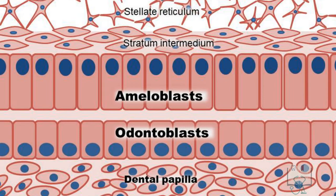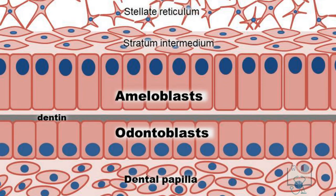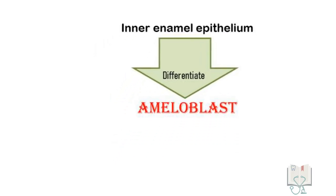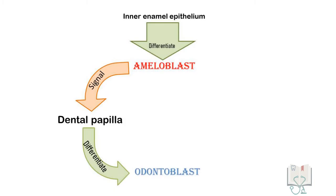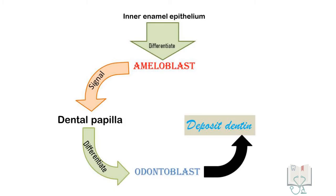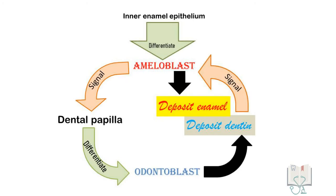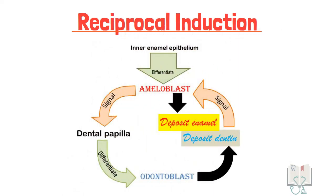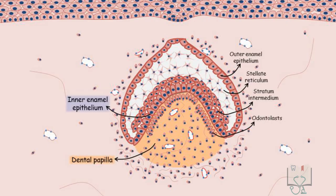Odontoblasts eliminate the acellular zone and start depositing dentine first. Only after the deposition of the first layer of dentine is enamel deposition initiated by ameloblasts. So we see that ameloblasts differentiate first, then they induce differentiation of odontoblasts, but the odontoblasts deposit dentine first. This dentine then induces ameloblasts to deposit enamel. This whole process of cells inducing each other to deposit enamel and dentine is sometimes called reciprocal induction.